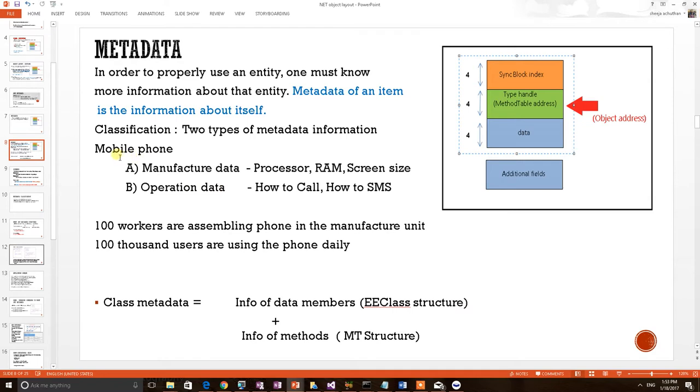Now, let's take into software sense. We are creating a mobile phone class. Then, information about the data members is the manufacture metadata, and information about its methods is the operation metadata of the class.